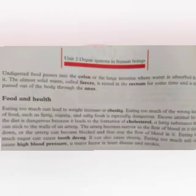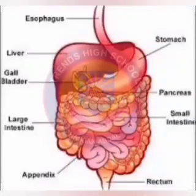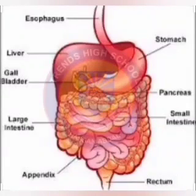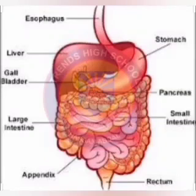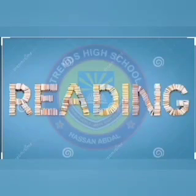Undigested food passes into the colon or the large intestine, where water is absorbed from it. The almost solid waste called faeces is stored in the rectum for some time and is then passed out of the body through the anus. جو غیر ہضم شدہ خوراک ہوتی ہے وہ بڑی آنت سے گزرتی ہے، پانی جذب ہو جاتا ہے، faeces rectum میں store ہو کر باہر آ جاتا ہے۔ امید ہے کہ آپ کو یہاں تک سمجھ آئی ہوگی۔ اگلے لیکچر میں ہم آگے پڑھیں گے۔ اللہ حافظ۔